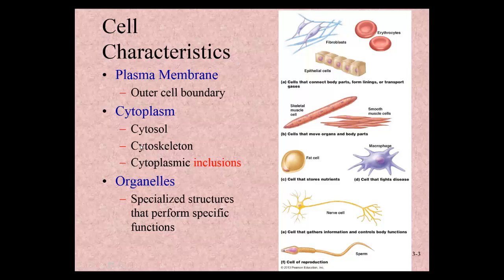The scaffolding, tiny little microtubules and microfilaments, make up the cytoskeleton. Think of that as just the scaffolding that gives shape to the cell.